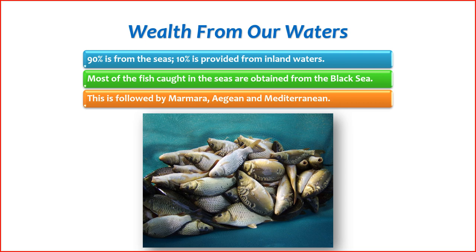9. Sustainability Efforts — Turkey is increasingly focusing on sustainable fishing practices to ensure the long-term viability of its fisheries. This includes awareness campaigns, scientific research, and cooperation with international organizations. 10. Export of Seafood Products — Turkey exports a significant amount of seafood products to various countries. Turkish seafood, both fresh and processed, is well-regarded in international markets. Overall, fishing is deeply intertwined with Turkey's cultural and economic heritage, providing livelihoods for many communities and contributing to the country's rich culinary traditions. Sustainable practices are increasingly emphasized to protect marine ecosystems and ensure the industry's longevity.